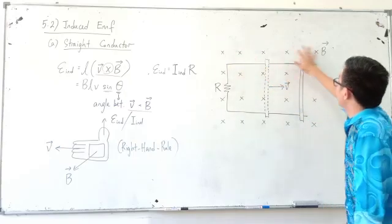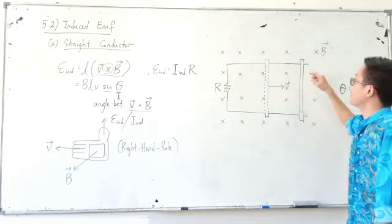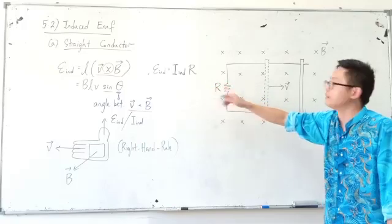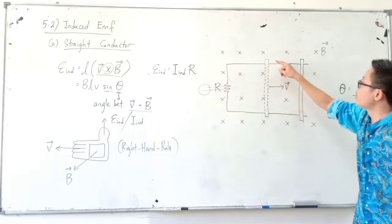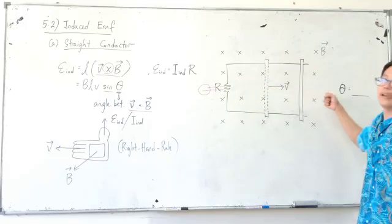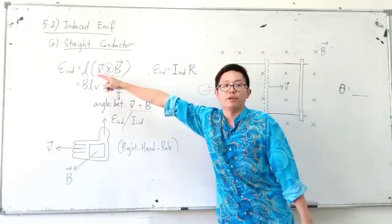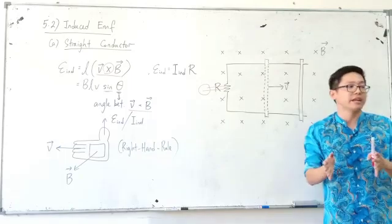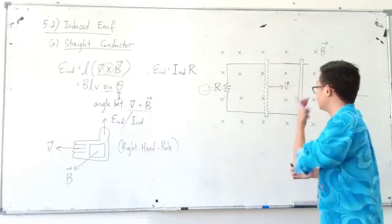Here is one example. We have a magnetic field region — the crosses mean the magnetic field goes into the paper. We have a circuit with a resistor, maybe an LED or light bulb. And this is a straight conductor. When the straight conductor moves to the right — velocity to the right — an EMF will be induced, producing an EMF and also a current. To determine the direction of the current, we use the right hand rule.